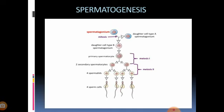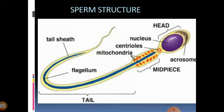Then after spermiogenesis, this mature spermatozoa gets released into the lumen of the seminiferous tubule. Now only it comes out from the sertoli cell and enters into the lumen of the seminiferous tubule. This process is known as spermiation. The mature spermatozoa being released into the lumen of the seminiferous tubule is called spermiation.